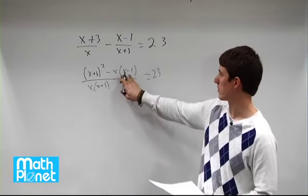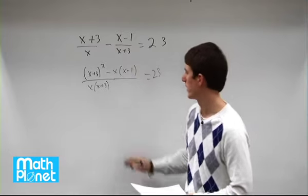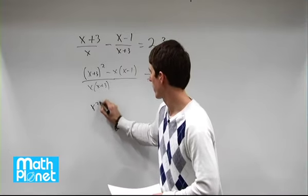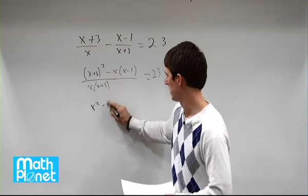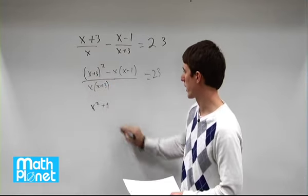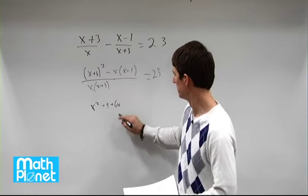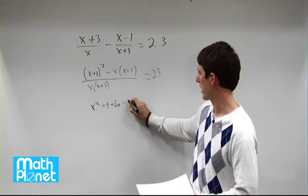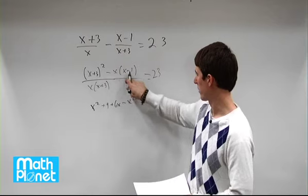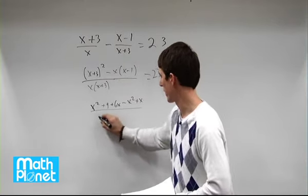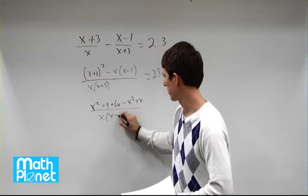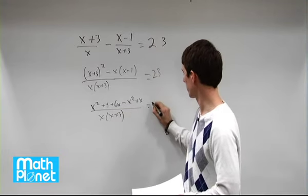Great, so now we need to expand this and simplify. So we'll have x squared from this plus 3 times 3 is 9, plus 3x plus 3x which is plus 6x minus now x squared minus minus is plus x all over x times x plus 3 equals 23 still.